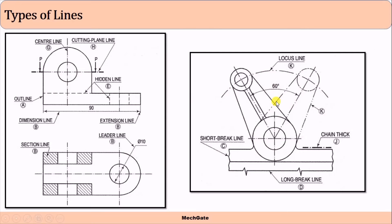The extreme position of this line is indicated by the chain thick line, which follows the pattern: long line, double dot, long line, double dot. This chain thick line indicates that this surface needs special treatment while preparing the object.